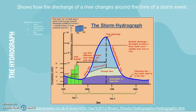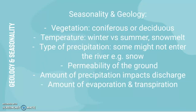Antecedent flow can make flooding worse. If it was raining the day before and the ground is already saturated, it can't store any more water, so you'd have a steeper rising limb, a shorter lag time, and the flood would likely be more severe.